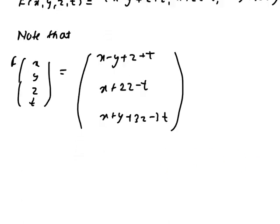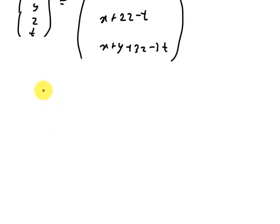So now F of X bar equals A X bar, where X bar is X, Y, Z, T transpose. So now matrix A, write the matrix A.